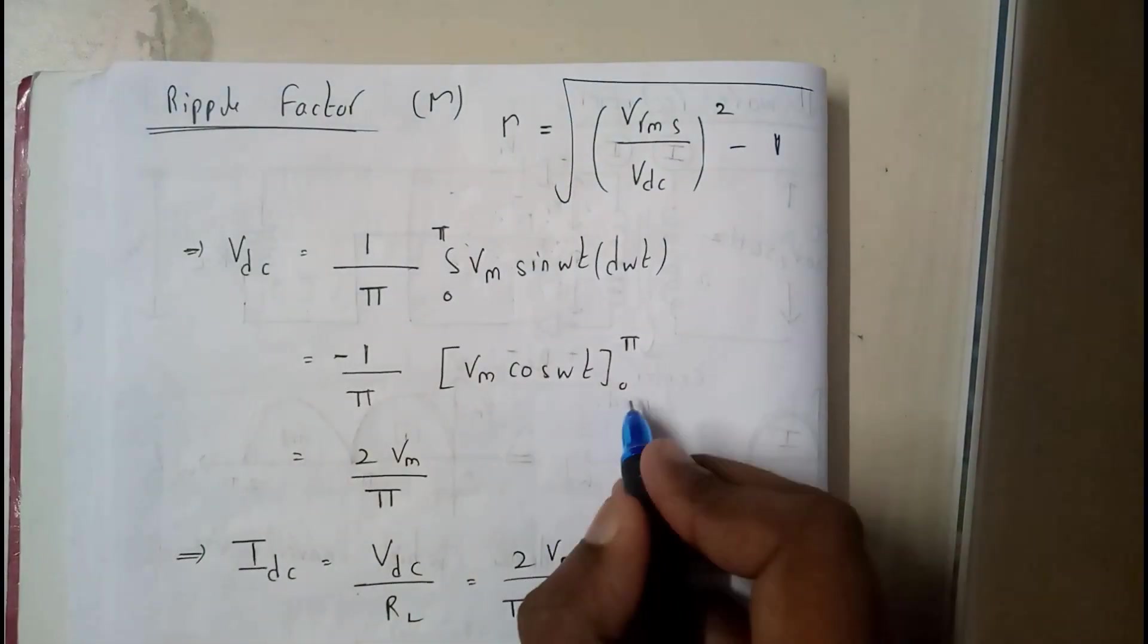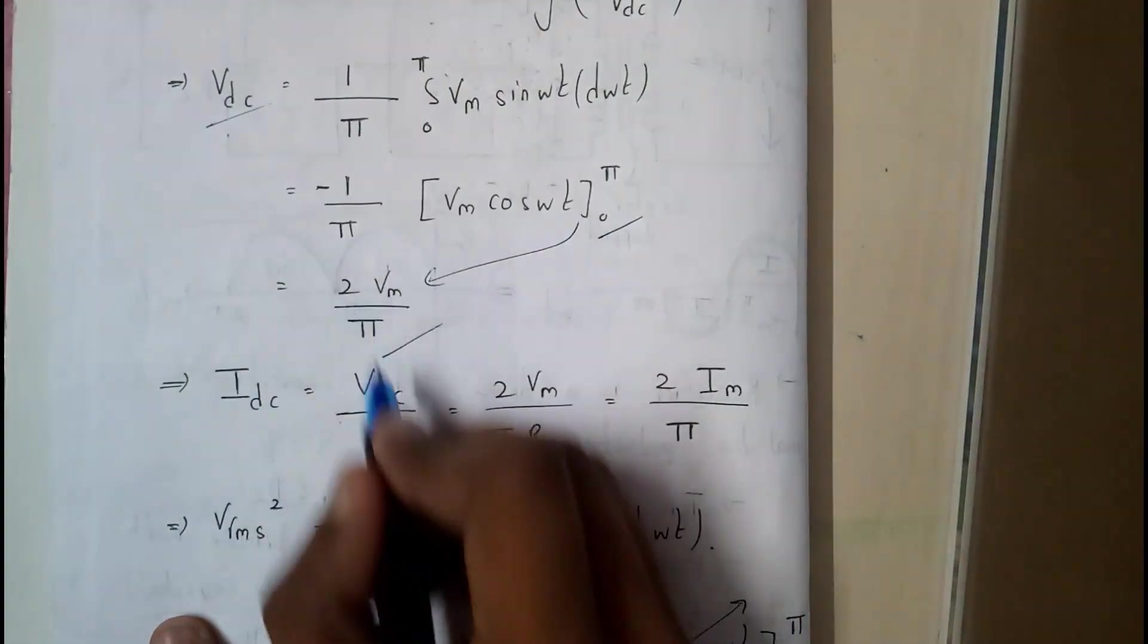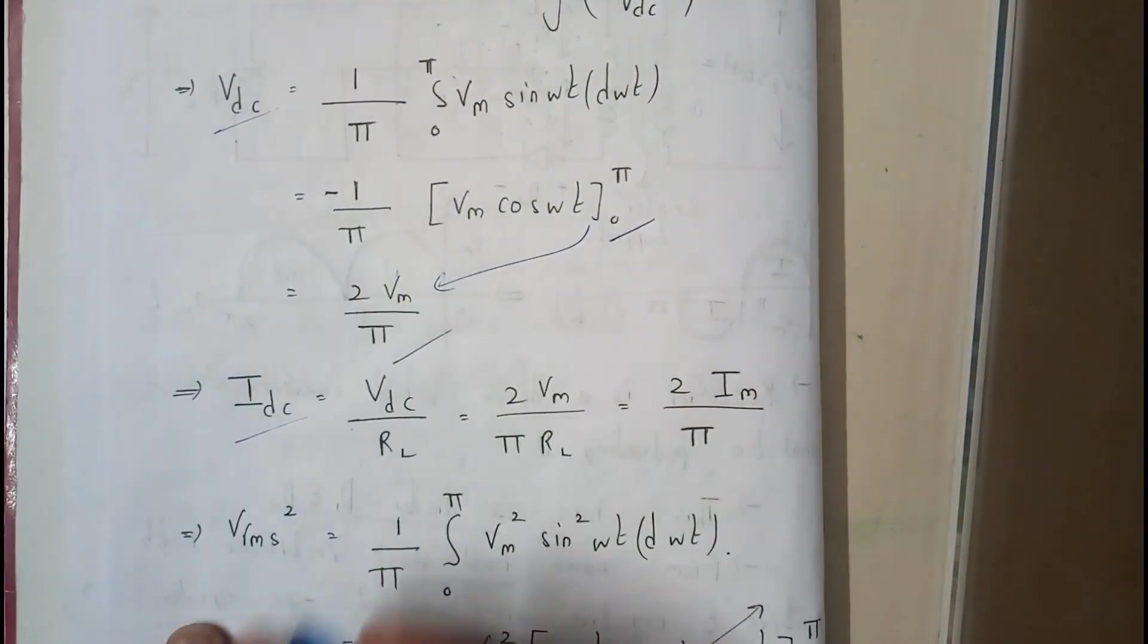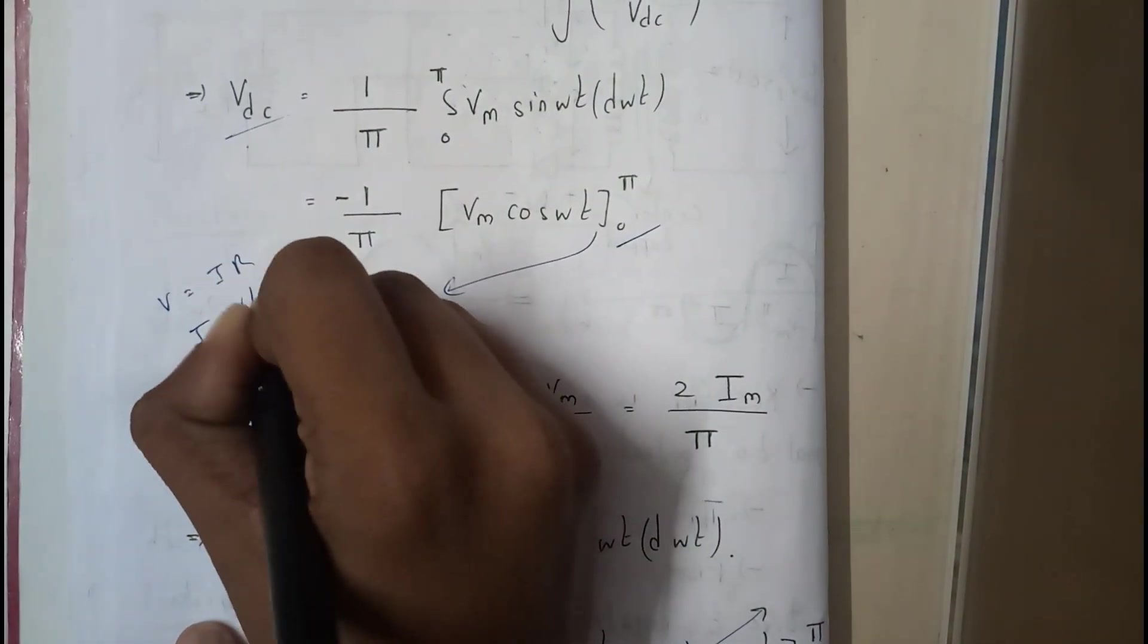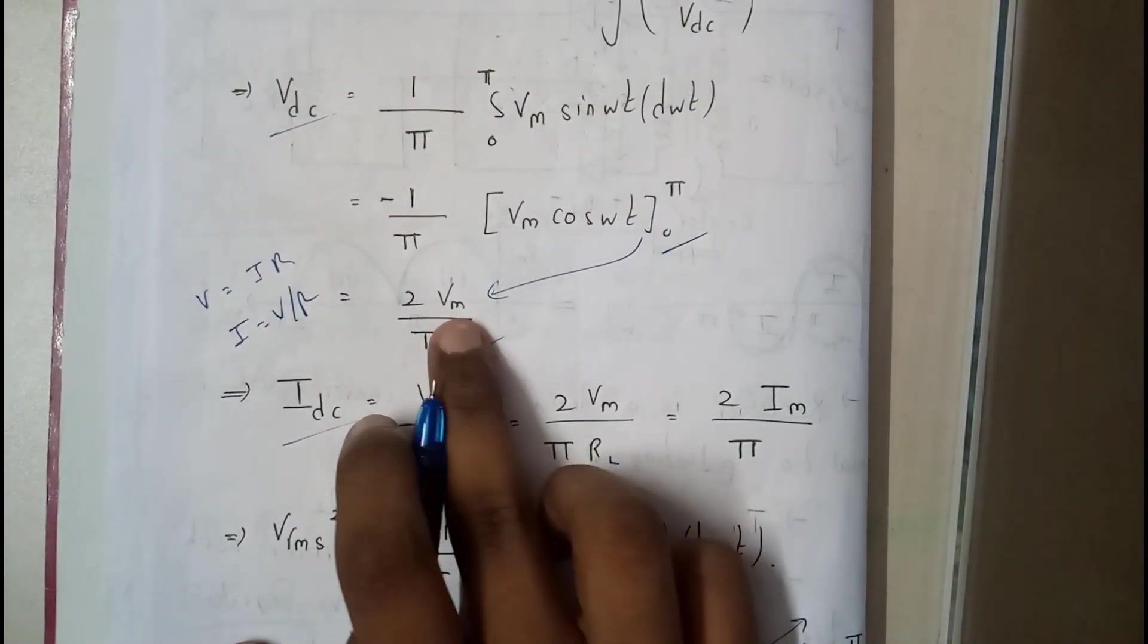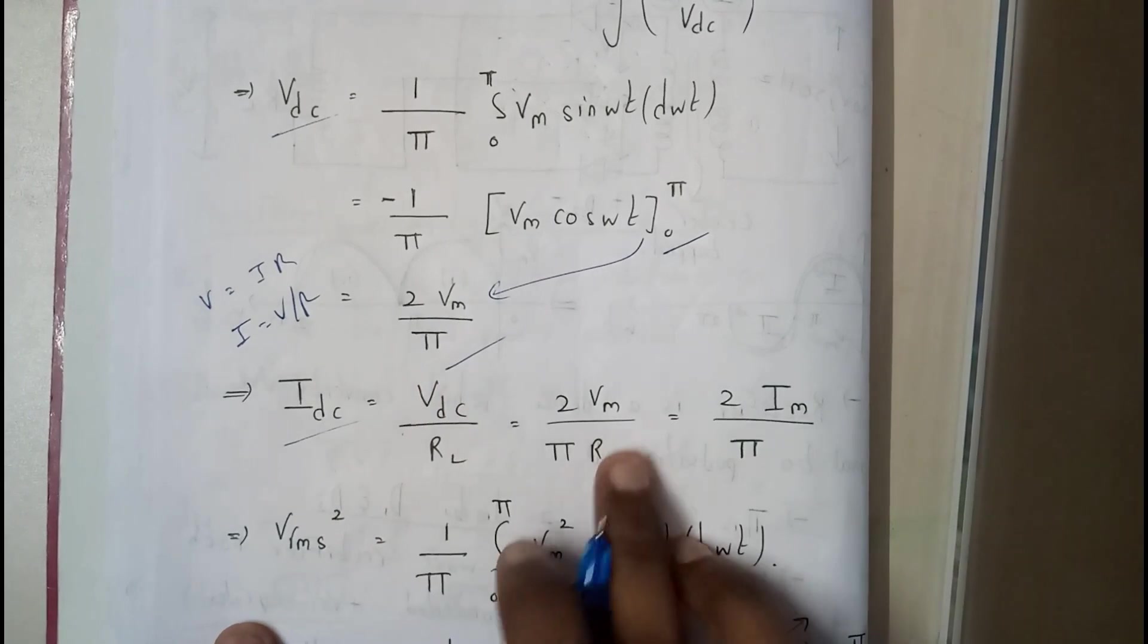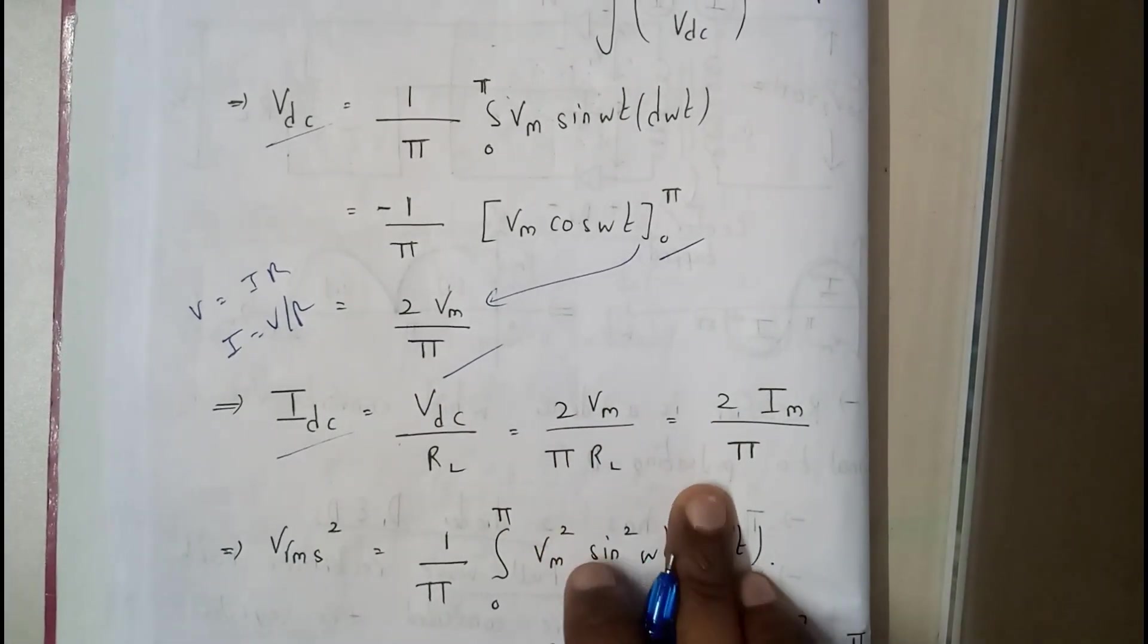We need these V_rms and V_dc values. So V_dc is 1 by π integral 0 to π of V_m sin ωt dωt. Integration of this is minus cos. So substituting the limits we got this. Here it is V_dc. If we want I_dc, basically V equals IR, so I equals V by R. So I_dc equals V_dc by R_L, which is 2V_m by πR_L, equals 2I_m by π.